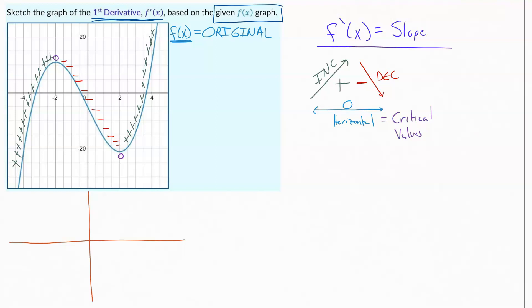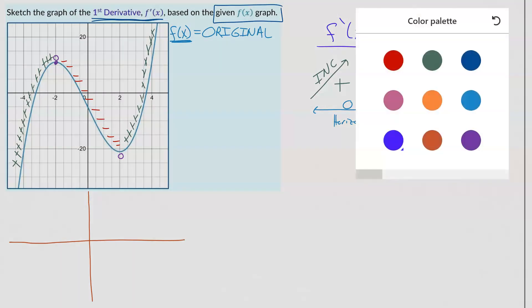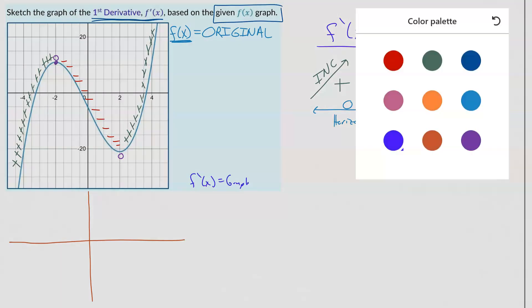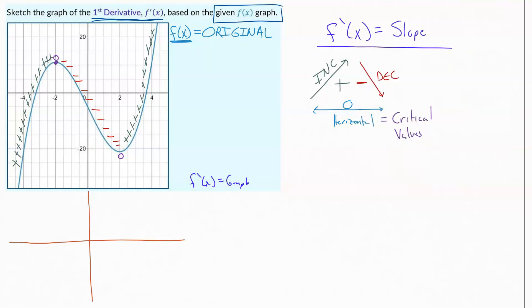And so the cool thing about those critical values is you know where those are at. Because when we come to our sketch of our derivative down below here, doing our derivative graph, we're only caring about positive, negative, and zero.